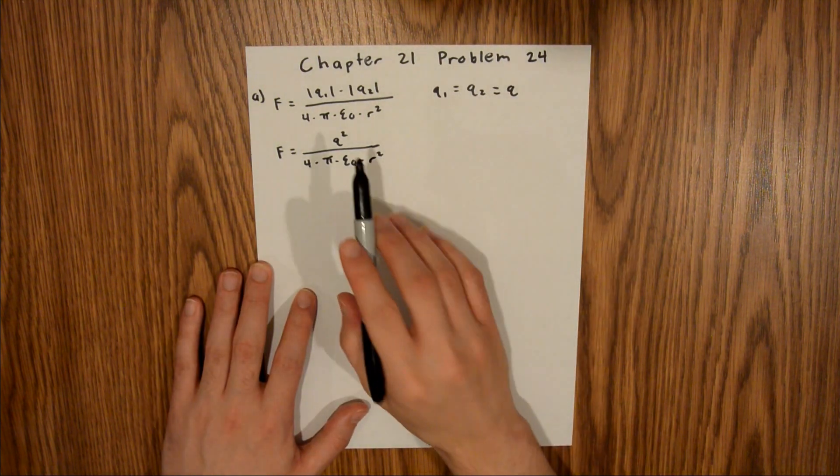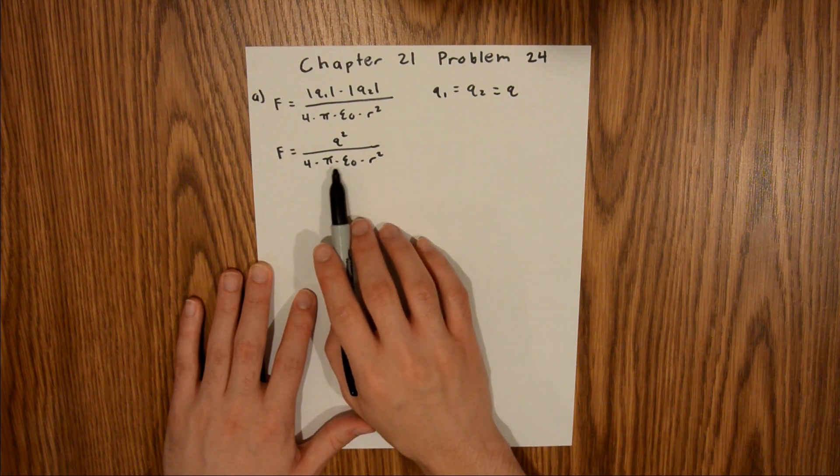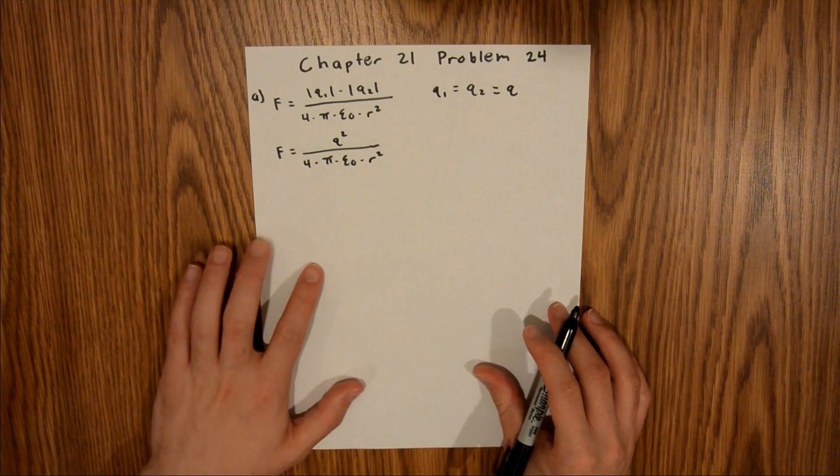So we'll say F is equal to Q squared divided by 4 pi epsilon naught times r squared. In the problem we are given both the charge and the distance between the two water droplets, and these two are constants, so we have everything here we need to solve for Part A and we can just plug those in.